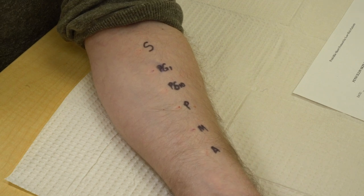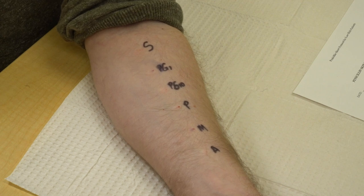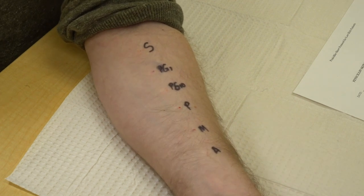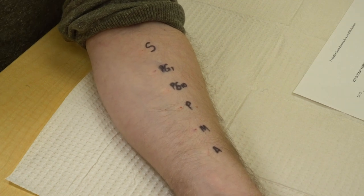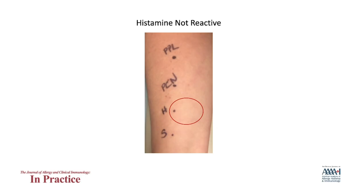After 15 minutes the test is again ready to be read. After ensuring we can interpret the test — histamine was positive either on skin prick or intradermal, and saline is negative — we can read the intradermal tests. Tests are read separately after prick and intradermal testing. First, ensure that you have adequate controls and do not have a negative histamine test; the histamine test should be clearly positive.